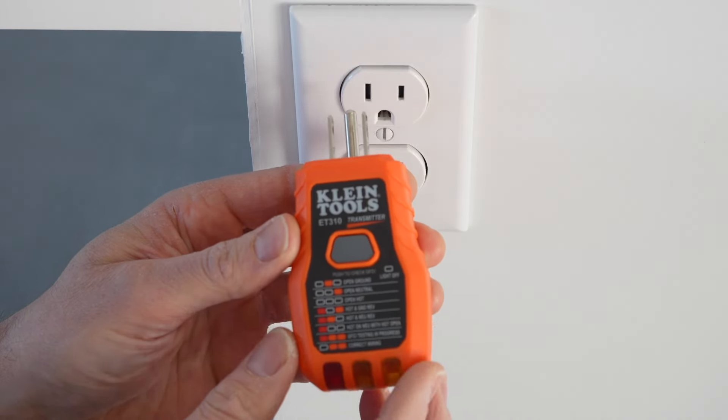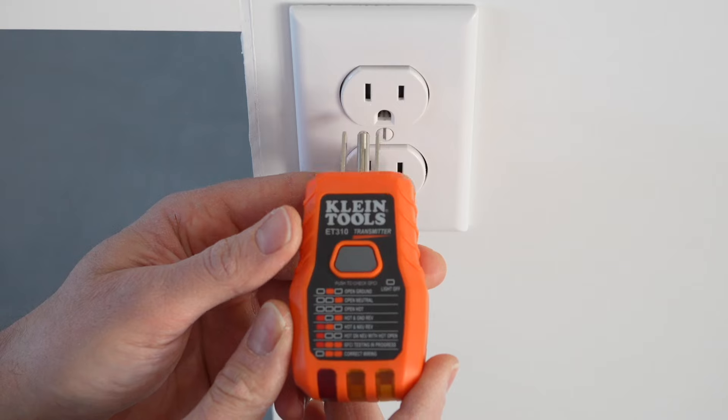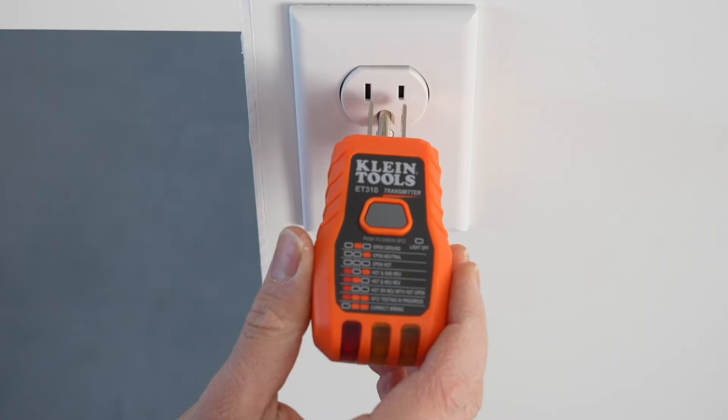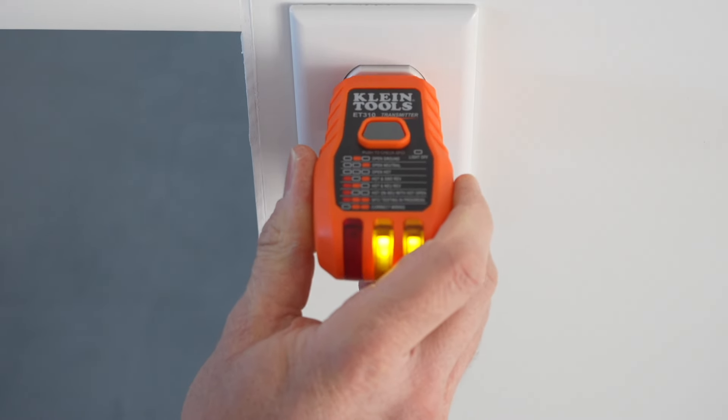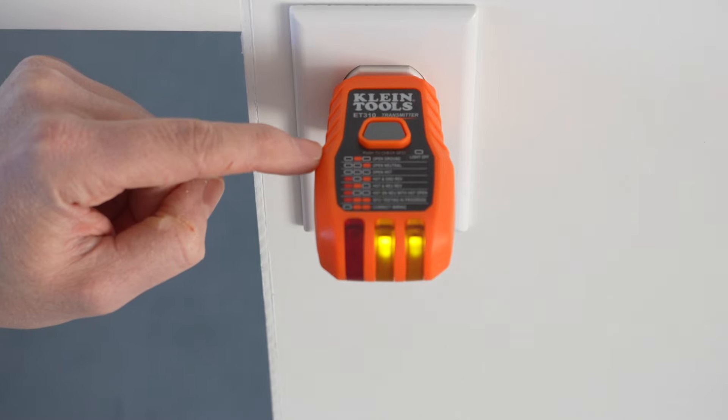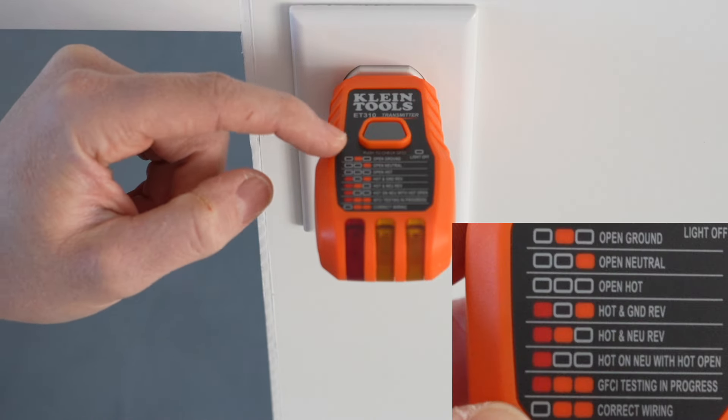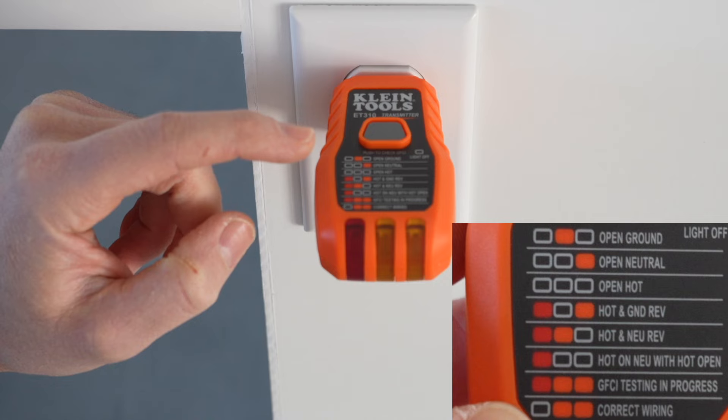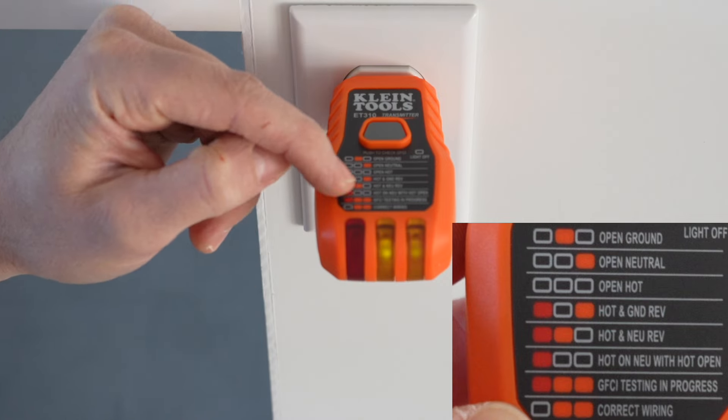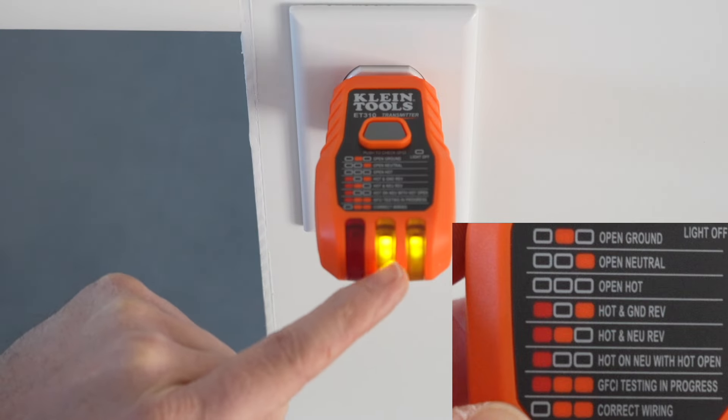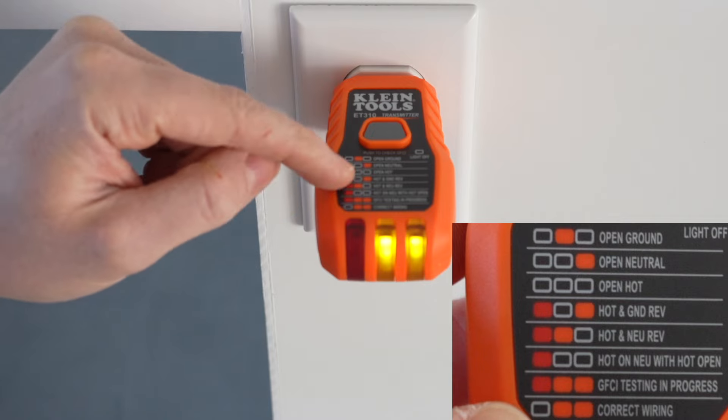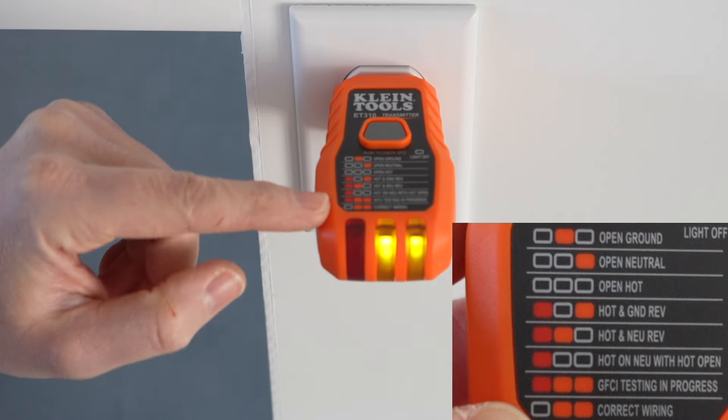This receptacle is part of the kitchen island and it is GFI protected via the breaker. This does not require batteries to operate unlike the non-contact voltage tester I just showed you. So all we got to do with this, we'll slide it right into the receptacle. This is a chart of any wiring that may be wrong. It's going to show up and give you a code to address that issue. But as you can see, this is correctly wired because we got two yellow lights here on the end.